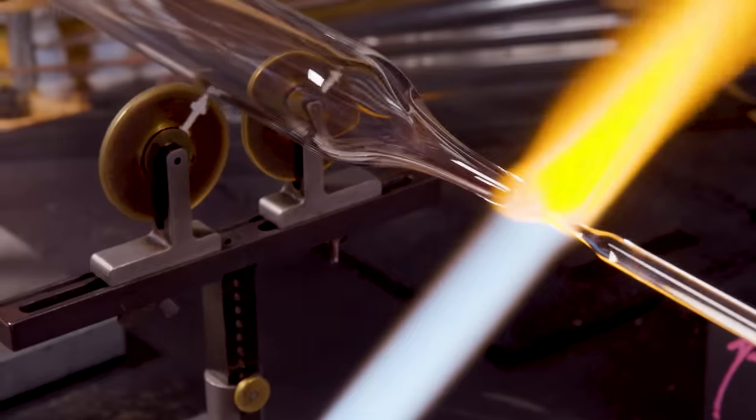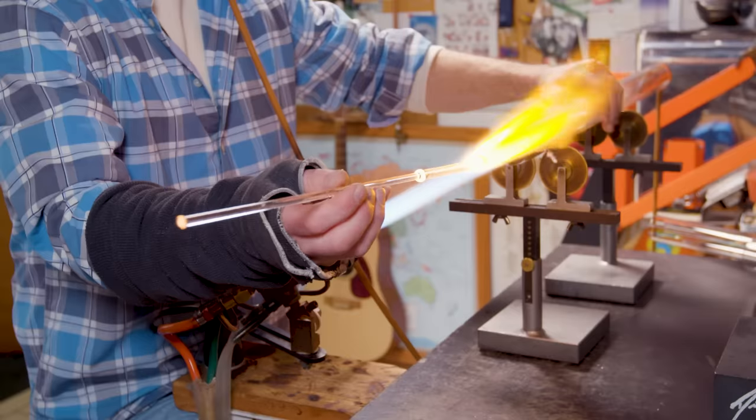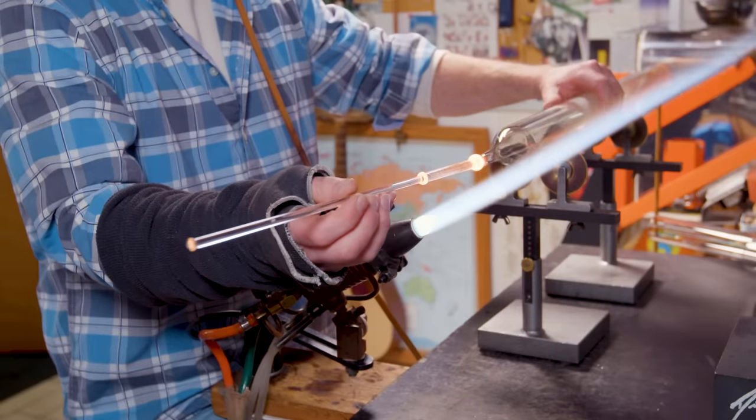So that's why the even rotation of the glass is important. To get the even heat all the way around. If I was to just stand still, the glass would boil in that spot where the torch was hitting it and it would fall to the ground.